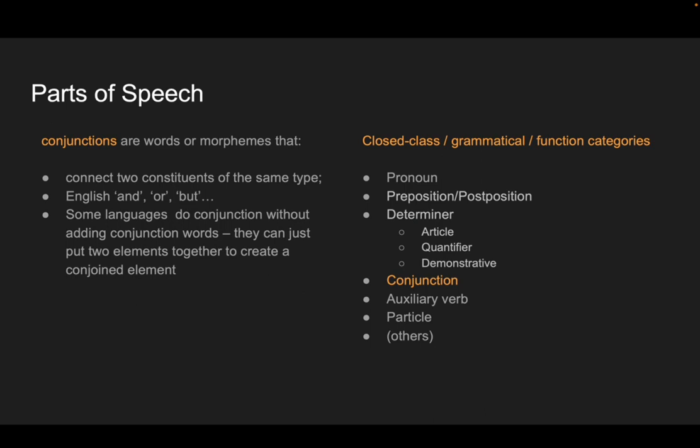Conjunctions — you've got to have a way to combine bits together. Things that have meanings like 'and,' or other forms of conjunction like 'but.' Some languages have little words for this; others do it by the syntax, having just a way you can put two elements next to each other to convey an 'and' type meaning. But everybody has ways of doing conjunctions, so we'll look for those.